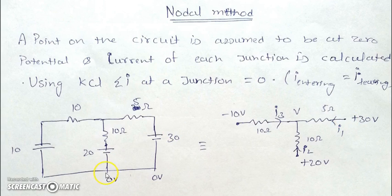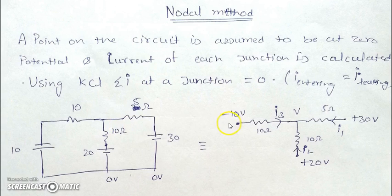If this is zero, then this point will be plus 20 volts, because moving from negative to positive gives a rise in potential of 20 volts. Similarly, at this point, moving from positive to negative gives a decrease of 10 volts from zero, resulting in minus 10 volts. So the three potentials at the points are +30, +20, and −10, and we assume the potential of the node to be V.